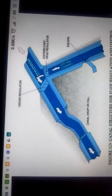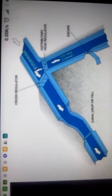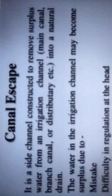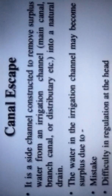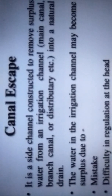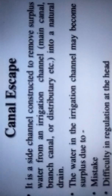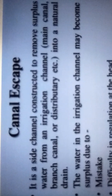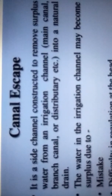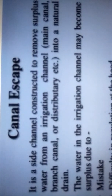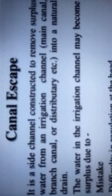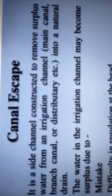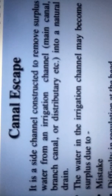What is the use of an escape? Canal escape is a side channel constructed to remove surplus water from an irrigation channel — whether a main canal, branch canal, or distributory. It can be constructed into a natural drain. The water in the irrigation channel may become surplus due to a mistake in regulation.